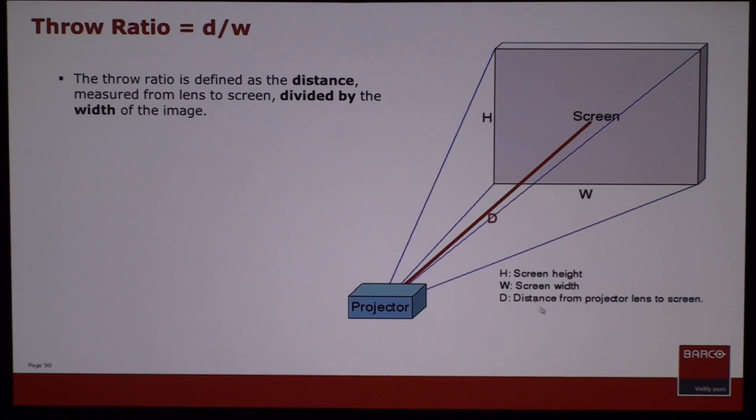Throw ratio equals distance divided by width. The throw ratio is defined as the distance measured from lens to screen divided by the width of the image. To calculate the width of the screen where the lens is at a certain distance, width equals distance divided by throw ratio.